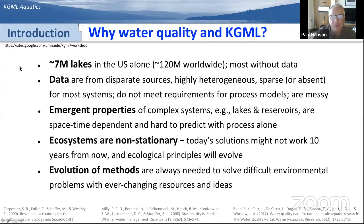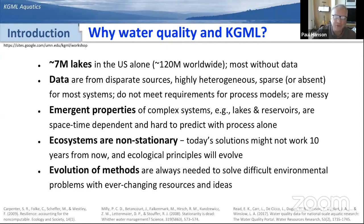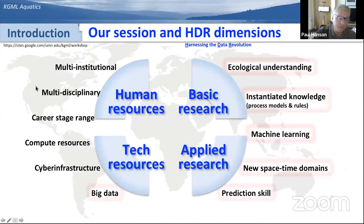Why is this a particularly good problem for KGML? Well, there are a lot of lakes in the world. In the U.S. there are about seven million lakes and across the globe there are about 120 million lakes, but not very many of these systems actually have data. The data are sparse, highly heterogeneous, and conform pretty much to a power distribution, meaning a few lakes have almost all the data and most lakes have very little. Water quality in lakes is an emergent property of ecosystems, deriving from interactions of physics, chemistry, and biology, external controls, and internal feedbacks — space and time scale dependent — making them really challenging to predict for process models or black box models. We're always looking for an evolution of methods that maps onto the available resources.